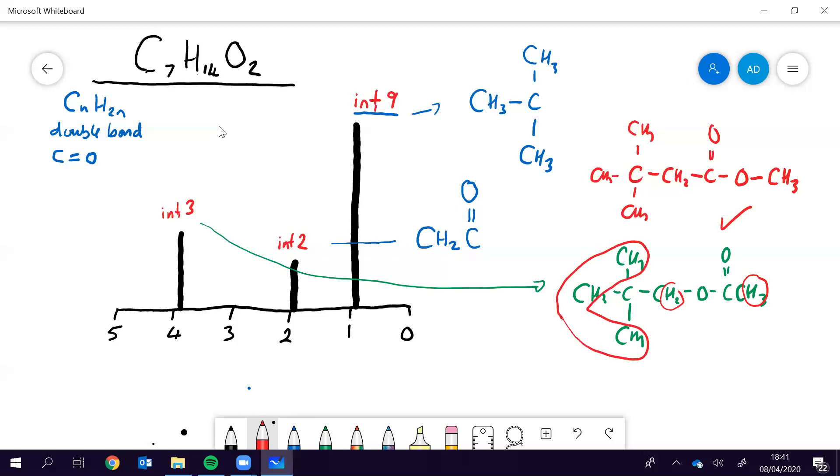But what would be wrong about this spectra is that would have a PPM of about four, not the two that it has there. And this one here, because it's next to carbon, that would have a PPM of about two, not four, which it is, you can see it is there. So that is another one. All right.